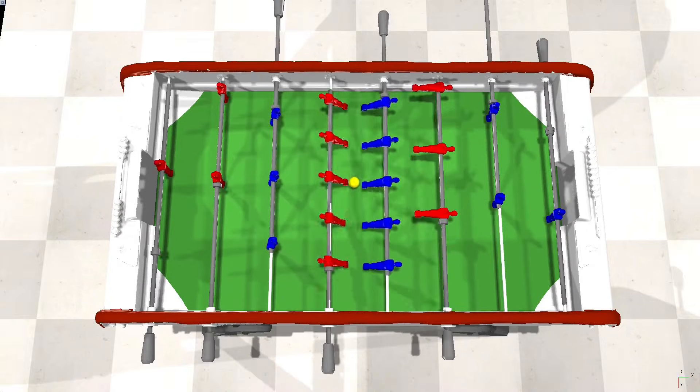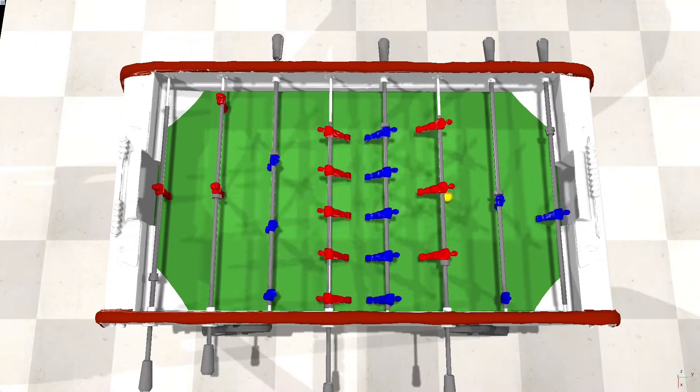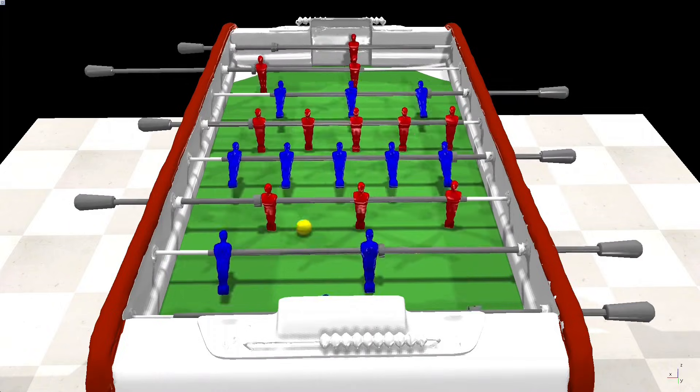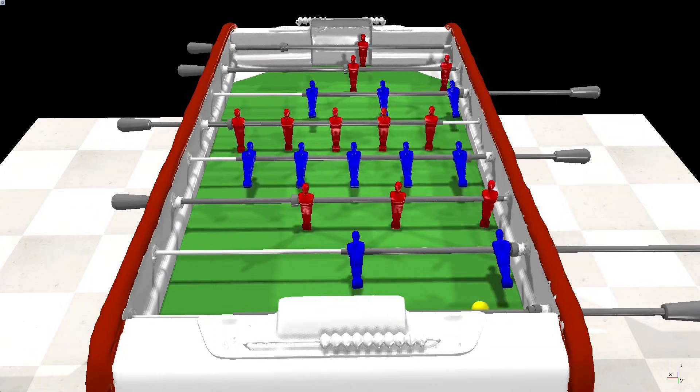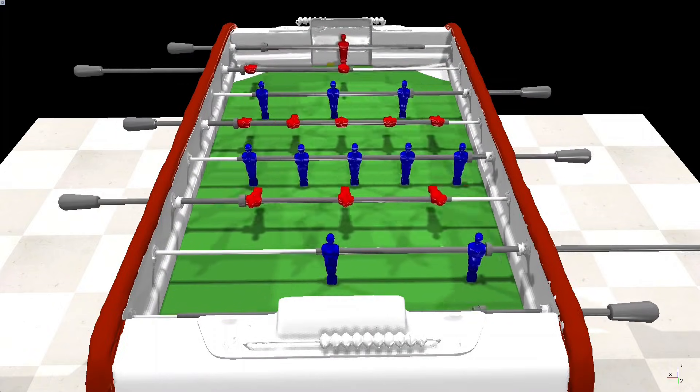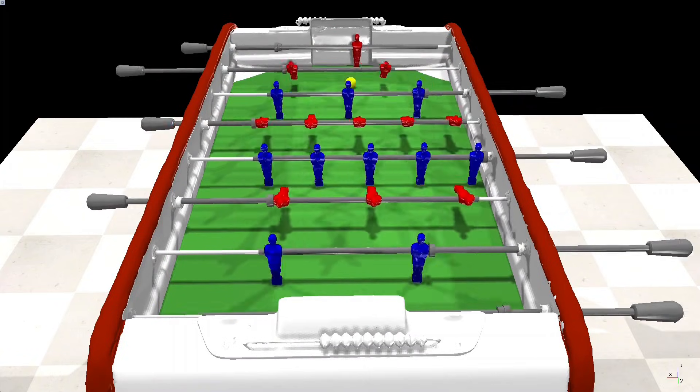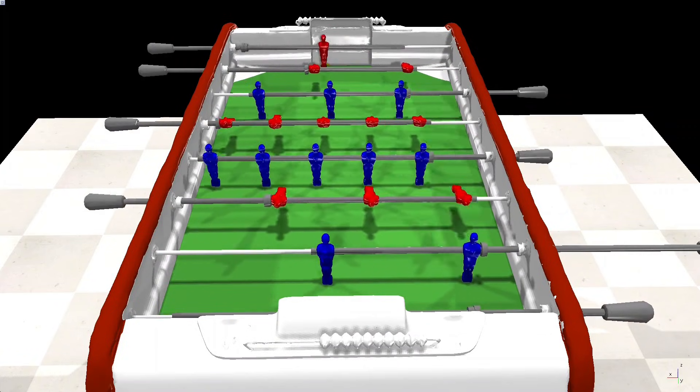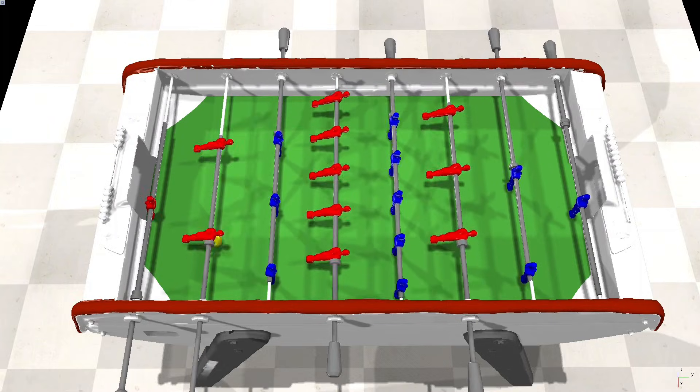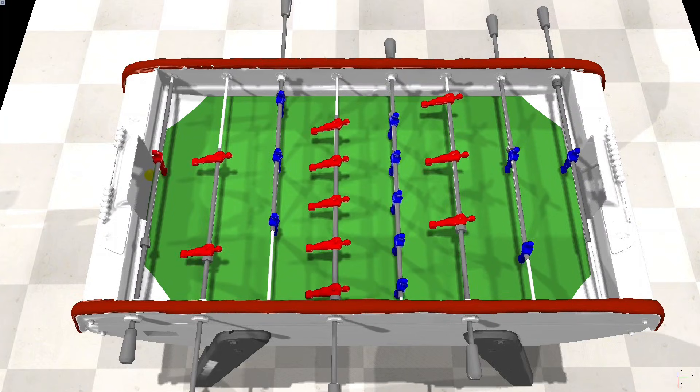So I did what any responsible engineer would do. I gave the blue team the exact same script as the red team and called it competitive balance. Now they're equally mediocre. That's not lazy coding. That's democratic gameplay distribution. Turns out when both sides suck equally, it looks suspiciously like actual foosball.